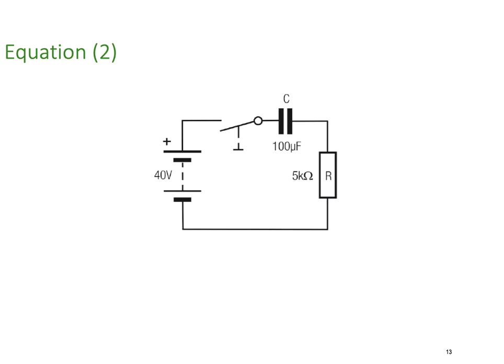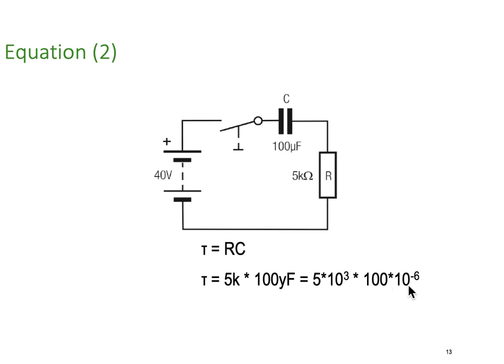Here's an example: we have a 40 volt supply, a 100 microfarad capacitor, and a 5k ohm resistor. The time constant is R times C, which is 5 × 10³ multiplied by 100 × 10⁻⁶, giving a time constant of 0.5 seconds. So it's going to take half a second for the voltage to get to 63.2% — we often round to 63%.